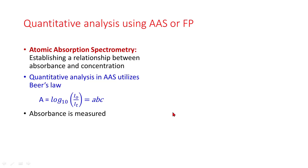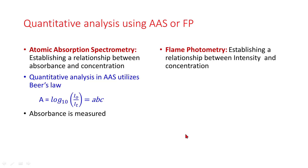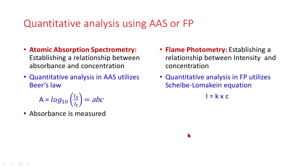Absorbance is measured. In case of flame photometry, it establishes a relationship between intensity and concentration. Quantitative analysis in flame photometry utilizes the Scheibe-Lomakin equation: I is equal to K into C, where K is a constant and C is concentration. Intensity emitted is measured.